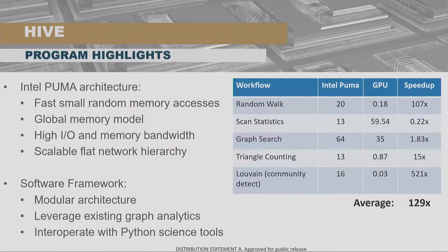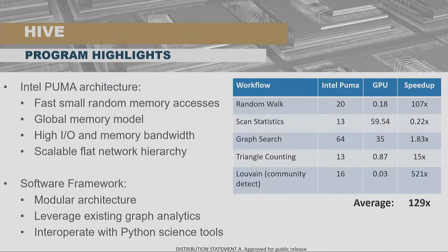What we've been building in the Hive program is an architecture that tries to address each of these issues. First, we fundamentally change the latencies associated with memory accesses by making small memory accesses efficient and making the latencies for accessing those memories much lower than traditional processors. On top of that, we've built systems that can communicate really well across processing elements and across memory. The net result — at least in simulation and emulation — is that we've been able to accelerate graph workloads at rates of over 100x, combining better memory design, better communications design, and parallel computation.